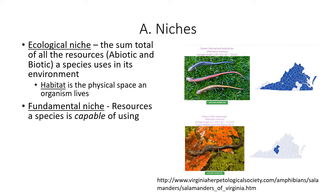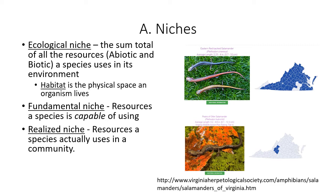The fundamental niche is the resource a species is capable of using. For example, the red-backed salamander is found in many counties in Virginia, while the peaks of otter salamander is found in just a few counties — really on one mountaintop in Virginia. The realized niche is the resources a species actually uses in a community. Competition may be affecting the distribution of these two species, keeping the peaks of otter salamander restricted to just that mountaintop.